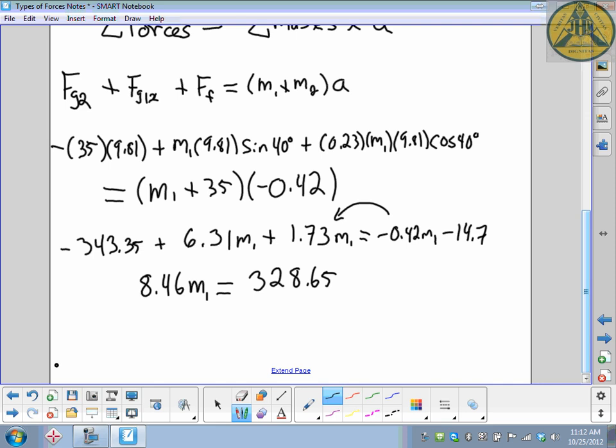Dividing both sides gives us our mass. It's going to be a positive number, that's good. Mass should always work out to be a positive scalar value. So that 328.65 divided by 8.46 gives us two digits, 39 kilograms. Exactly what we were hoping to get.